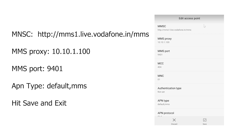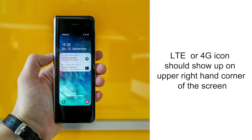This next one is very important — the APN Type. For this field, enter 'default,mms'. Please note that there is no space after the comma. Then for the remaining fields, just leave them with the default values. Save it and exit.